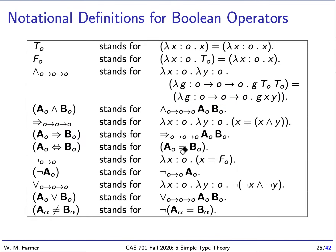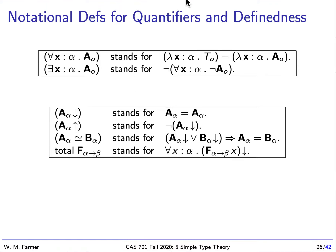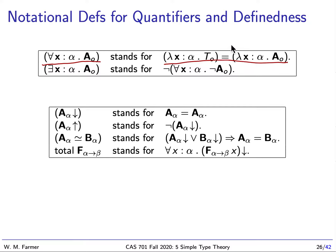Using these notational definitions, we can introduce the Boolean operators and notation for using them. We can also introduce notation for the quantifiers. The universal quantifier says: for all X of type alpha, the formula A is true. It stands for this equation — the function that maps alpha to the truth value true, so it's a constant function, equals the function that maps each member of alpha to the value of A. The only way this can be true is if A is true for all values of alpha. And then existential quantification is just defined using negation in the obvious way.